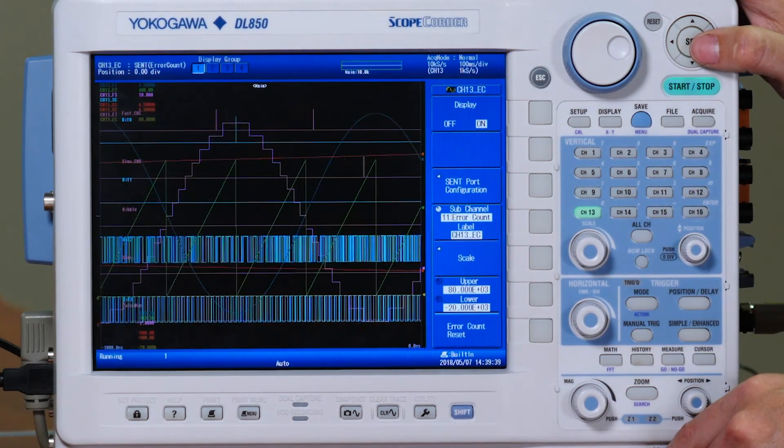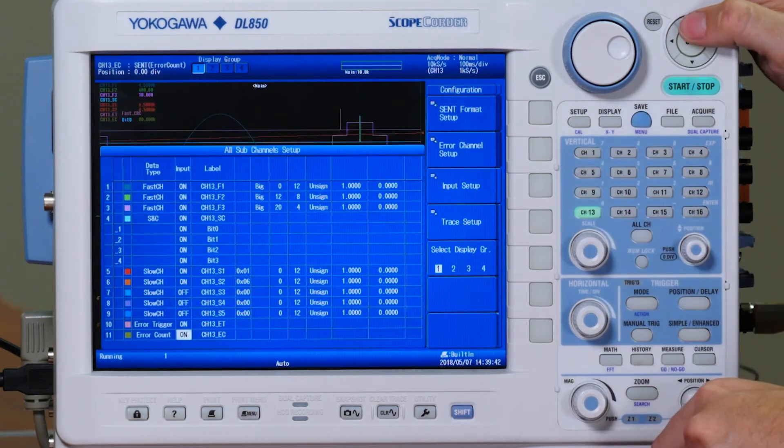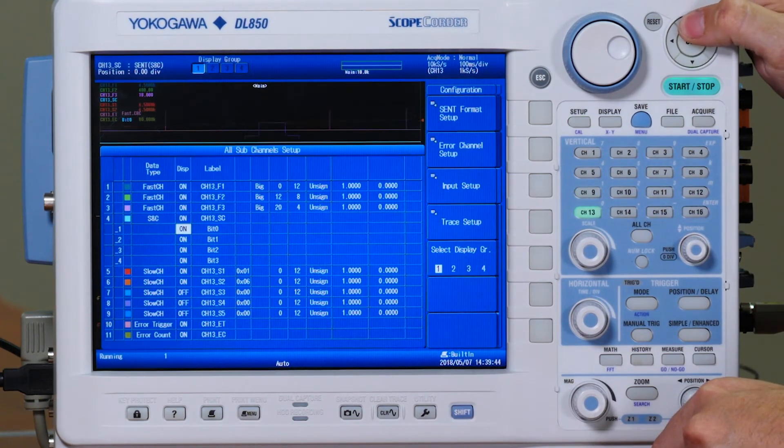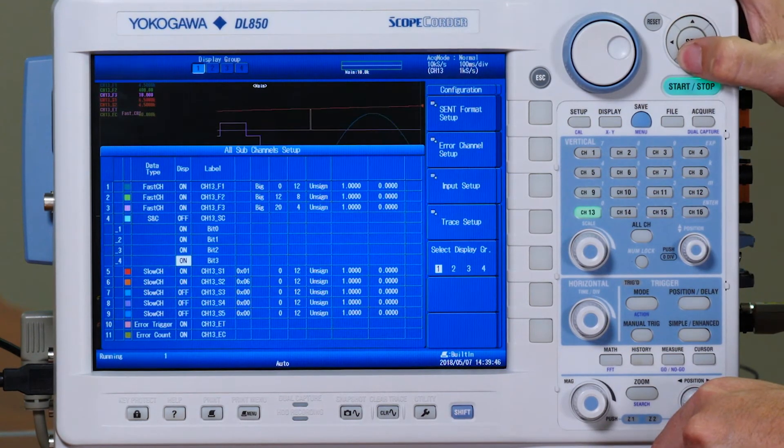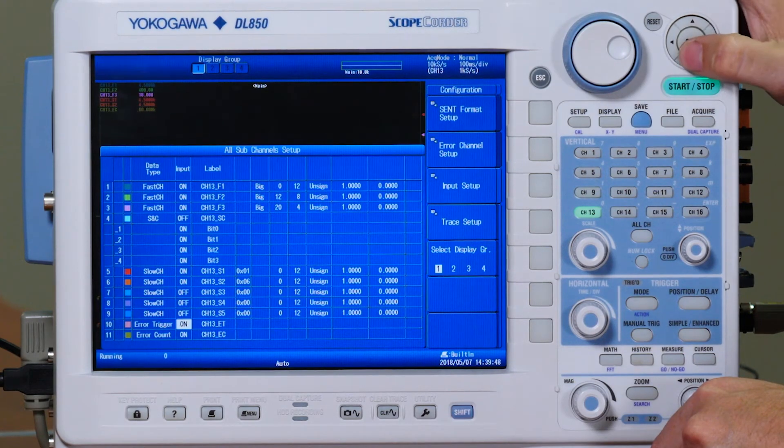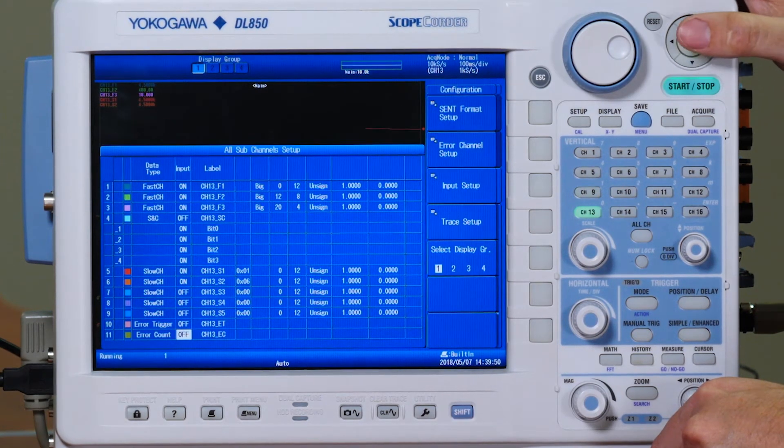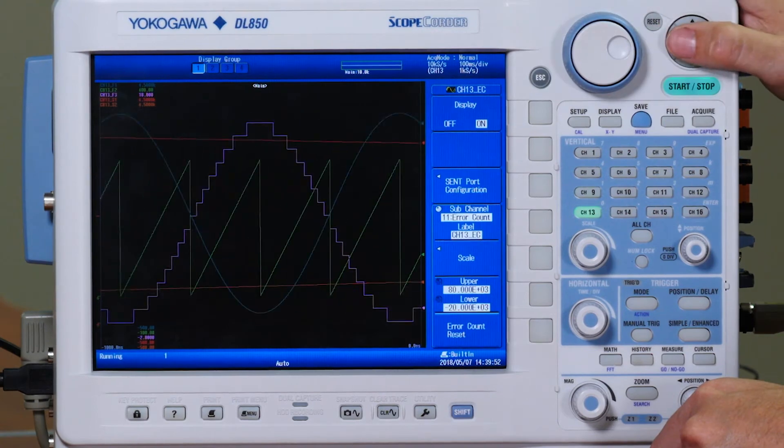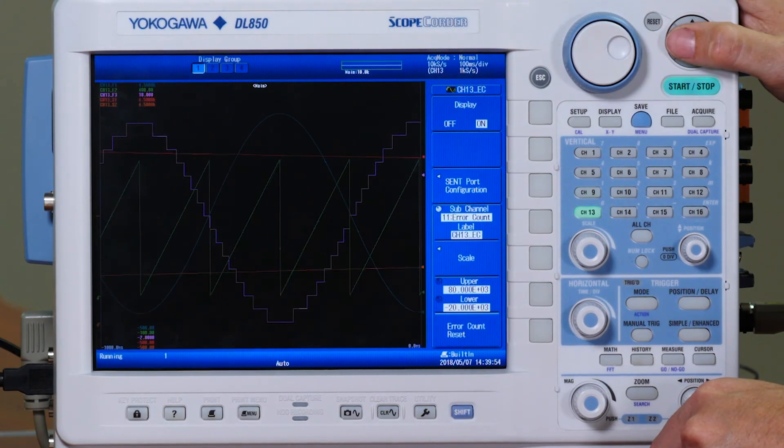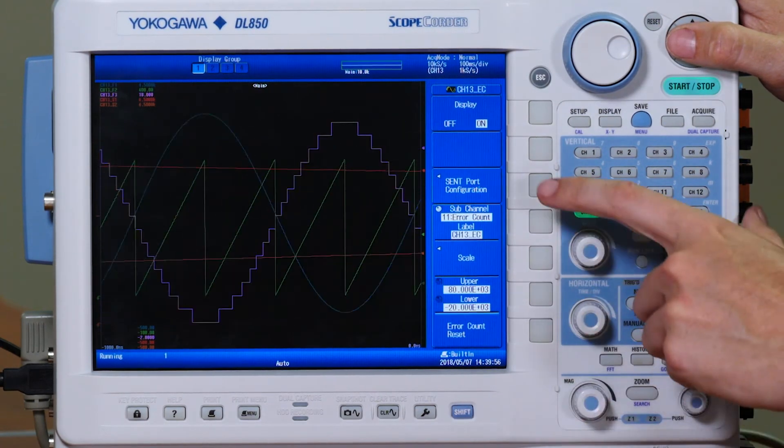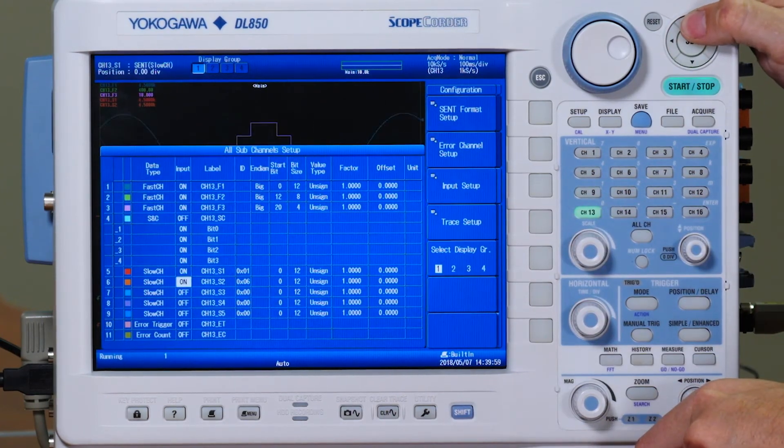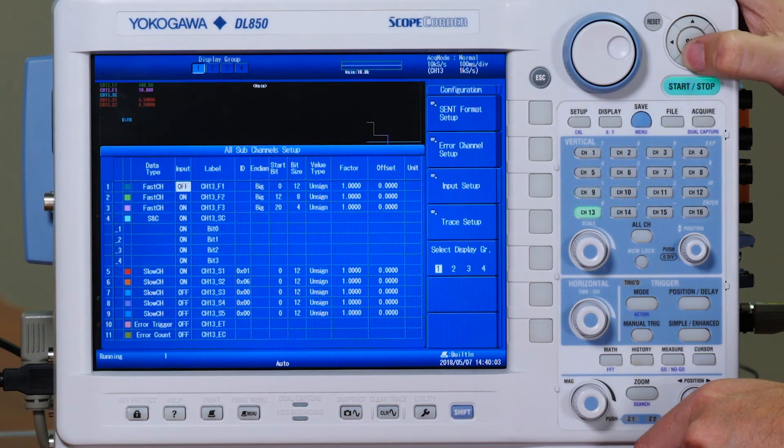You can also just show your analog data by going in and turning off your digital data, your error trigger, and your error count. Or if you just want your digital data, turn it on and turn your analog data off.